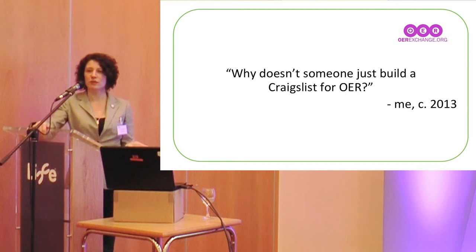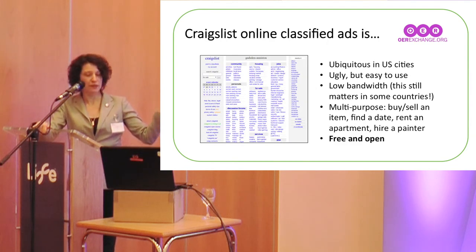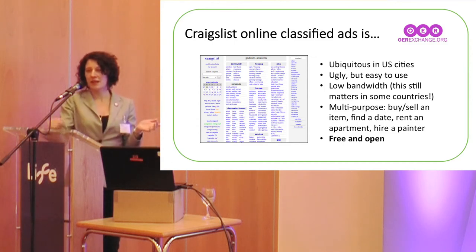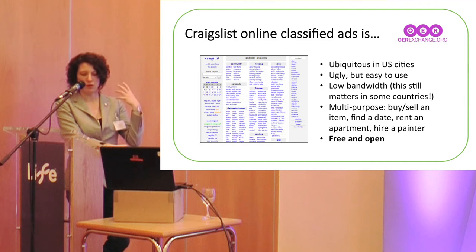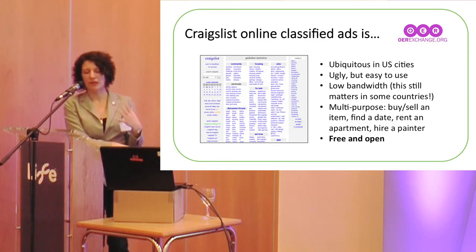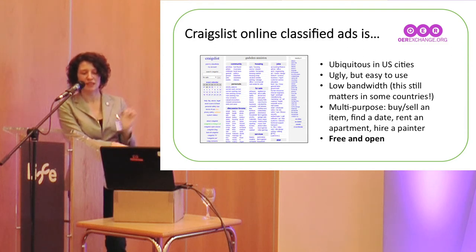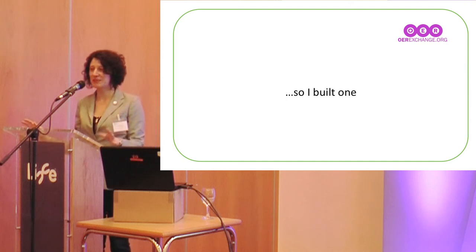I know not everyone outside of the US uses Craigslist, so briefly: it's not very pretty, it's very functional, very low bandwidth, and entirely ubiquitous in large American cities. It's a way that people buy and sell things, or talk about stuff — single-use posts. You just say 'I'm looking for a car' or 'I have a car to sell.' It's used for dating, hiring people, renting apartments — a very simple way of discussing and finding things.